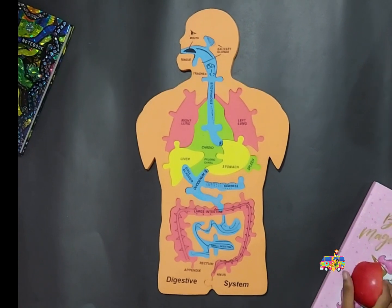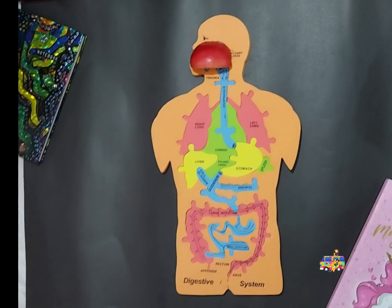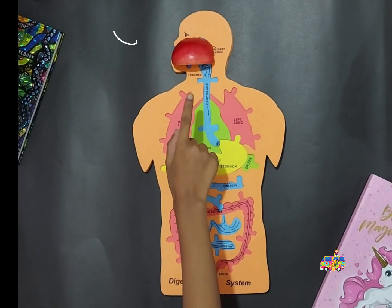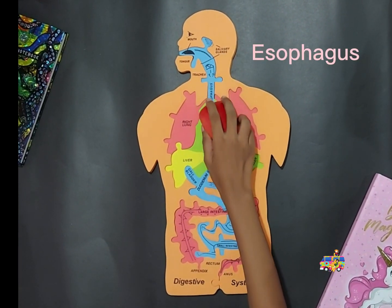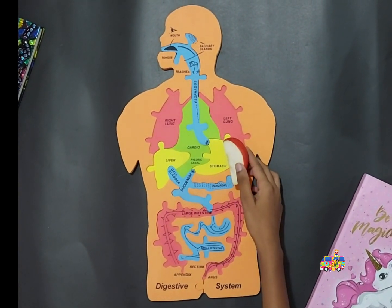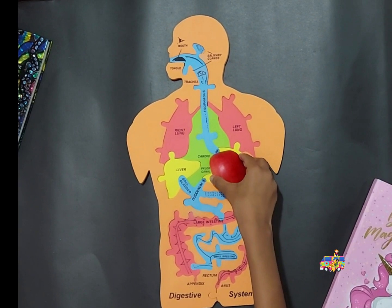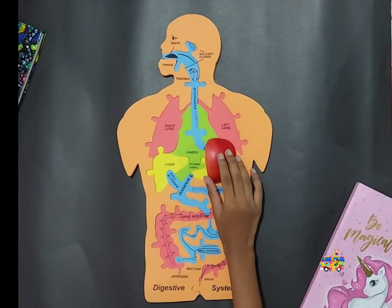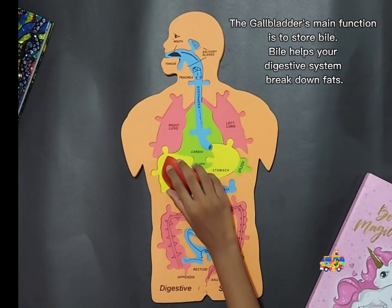As you can see, the digestive system begins when we eat our food through our mouth. Then the food goes through the esophagus and into this yellow part called the stomach. Here the food is crushed and broken down into small pieces. After this, the pieces enter the gallbladder.